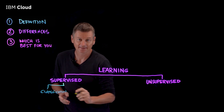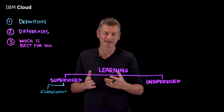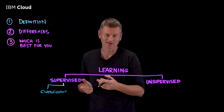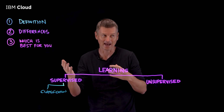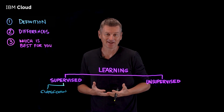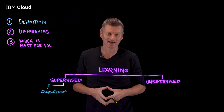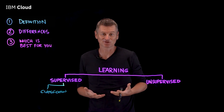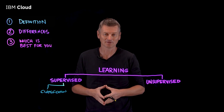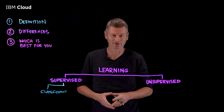Classification is where the output is a discrete class label, such as spam or not spam. Linear classifiers, support vector machines or SVMs, decision trees and random forests are all common examples of classification algorithms.